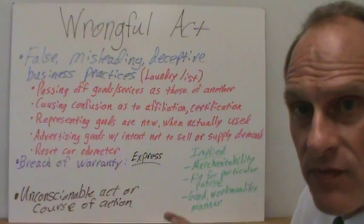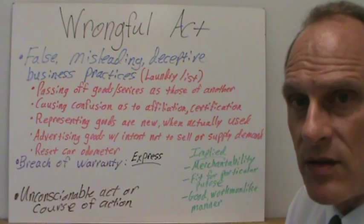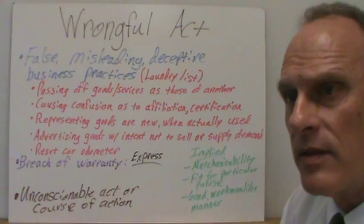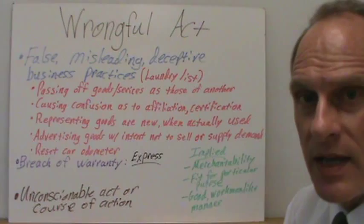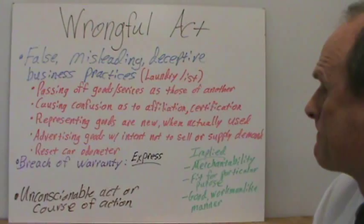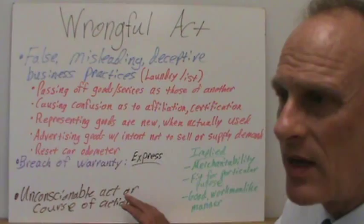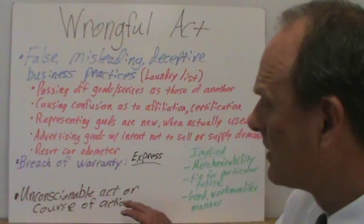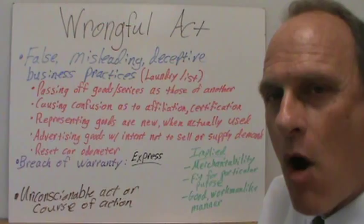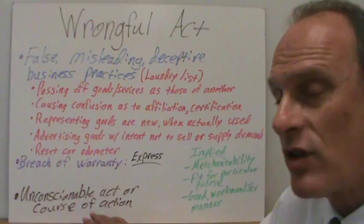There is also an implied warranty of good and workmanlike manner, which says that when you receive a service or buy a good, there was competence by the provider — it was done in a workmanlike manner with the level of expertise one would expect. And then we have unconscionable act or course of action, which is a catch-all. Unconscionable means extremely or outrageously unfair, usually involving an unequal bargaining position where one party is taking advantage of the other. That rises to the level of being called unconscionable and is a violation of the DTPA.